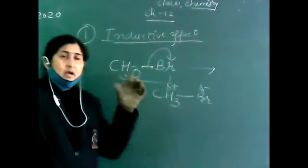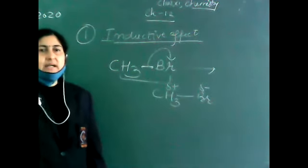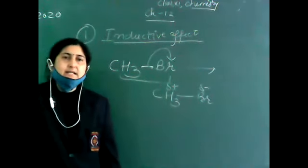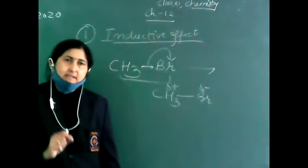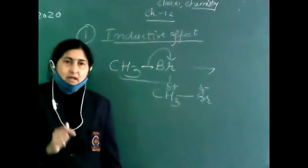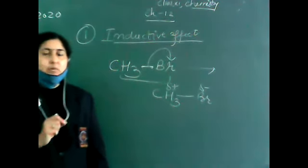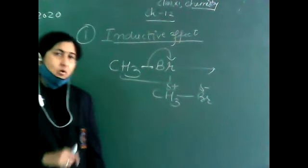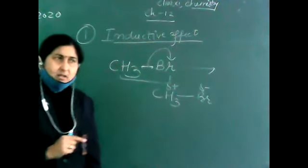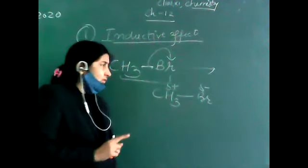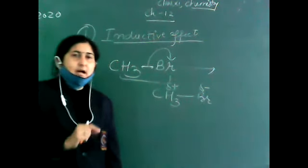Listen again. This is a polar covalent bond, which has two different electronegativities. CH3 is partially positive — partially means not completely — and Br is partially negative. This type of effect is known as the inductive effect.